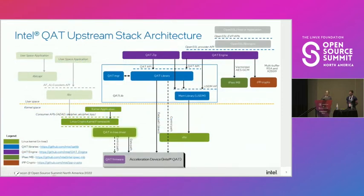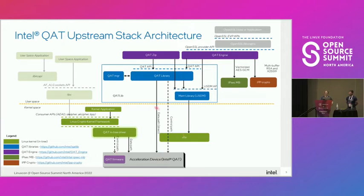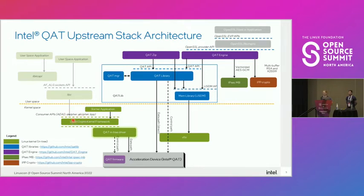Now showing what software modules are needed to enable the hardware — the focus today is on the green Linux kernel module. Starting at the bottom: we have the device, which has firmware we download to it. Then there's a bunch of Linux kernel components, mainly the kernel driver itself, which plugs into the Linux kernel crypto framework. Through that framework, symmetric and asymmetric crypto can be accessed by other kernel processes or by user space processes through the AF_ALG APIs into the Linux kernel framework and into the device driver.